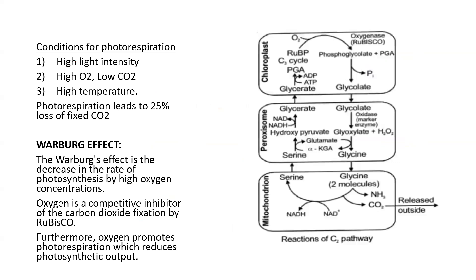Now see the steps in the next diagram. RuBP, a 5-carbon compound, combines with oxygen to form the 3-carbon compound PGA and phosphoglycolate, a 2-carbon compound. Phosphate is removed and glycolate is passed to the peroxysome. In the peroxysome, glycolate is oxidized — oxidase is a marker enzyme of the peroxysome — forming glyoxylate with peroxide. Glyoxylate then changes to glycine, the simplest amino acid, with glutamic acid providing the amine group.